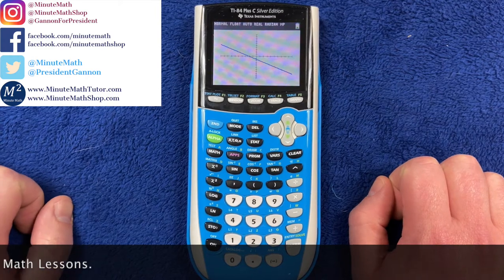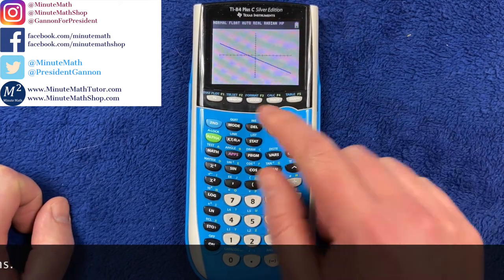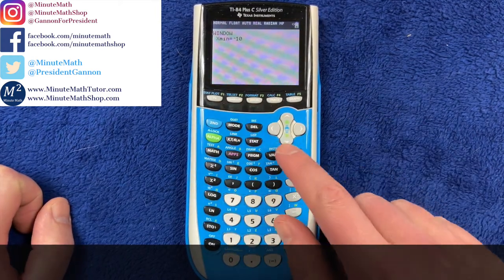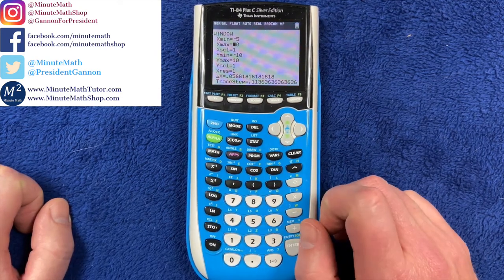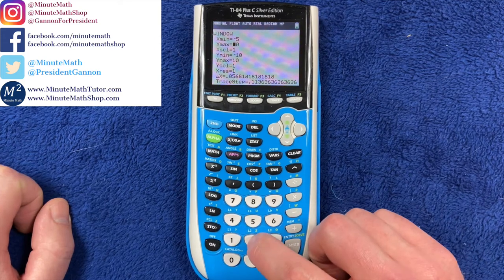I can zoom in a little, we can change our window, so let's make the x minimum negative 5 here, the x max positive, let's say 2.